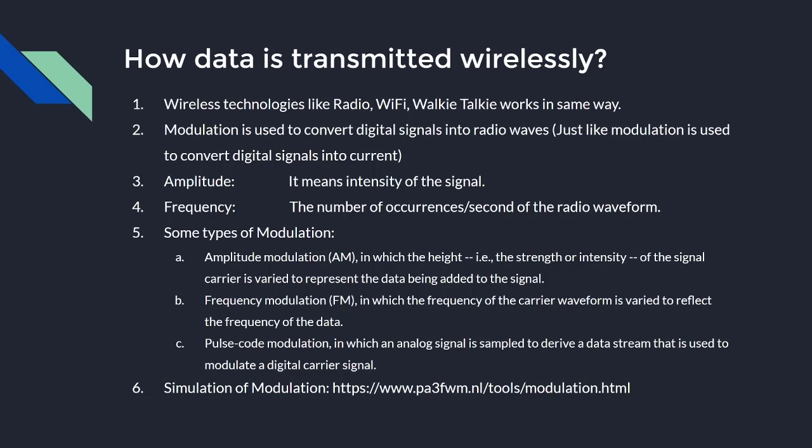If you wonder why Wi-Fi signals weaken as you move further away, the answer is that home routers use very little power — about 100 milliwatts — to generate the radio waves received by your phone or laptop. Radio stations, on the other hand, use a huge amount of power, which is why transmissions from a radio station can cover an entire city or an even bigger area.